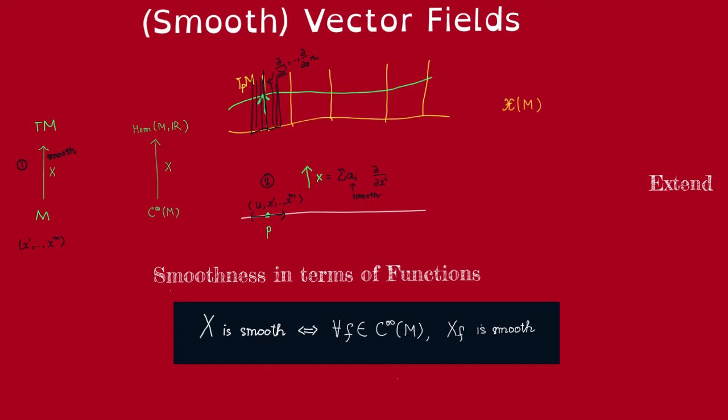Now we give the third characterization. When we view vector field as a map on smooth functions, then we claim that a vector field X is smooth if and only if it preserves smooth functions. So it sends a smooth function to a smooth function. Okay, so let's see why. So let's suppose that X is smooth, and let's prove this direction.